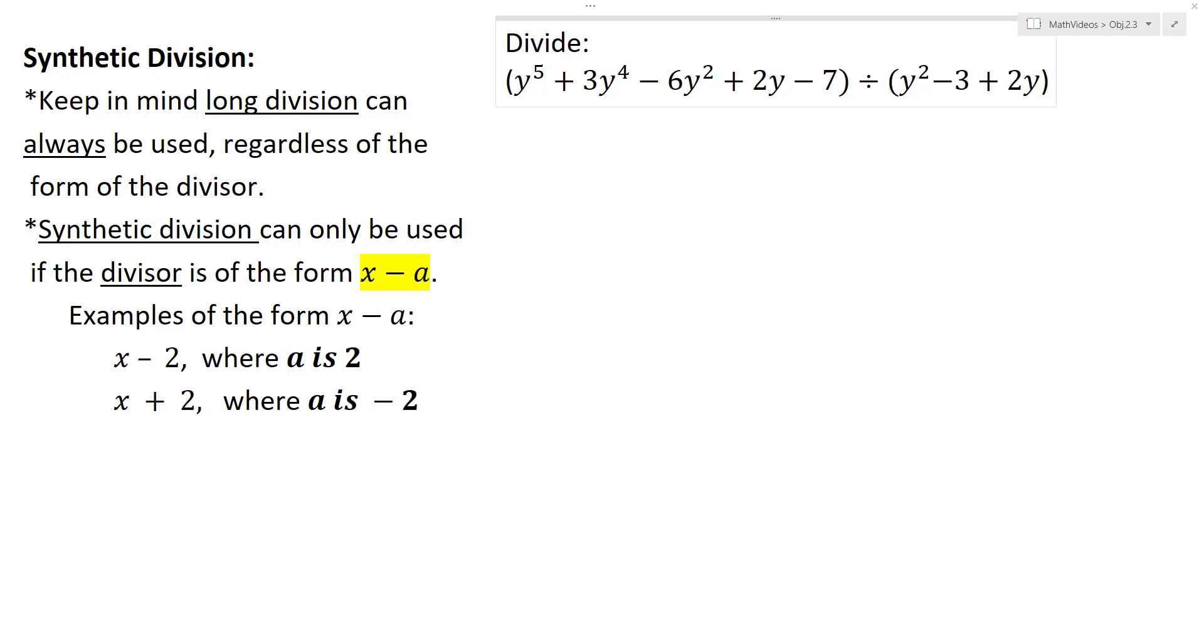there are specific criteria in order to be able to even perform synthetic division. The main criteria is that the divisor has to be of the form x minus a. Just to remind you who the divisor is, it's the one you're dividing by. So it has to be of the form x minus a. If it is not, then you're going to want to do long division.